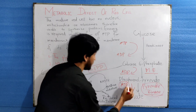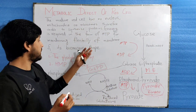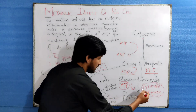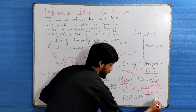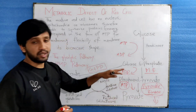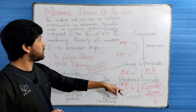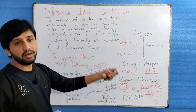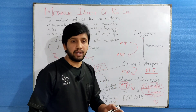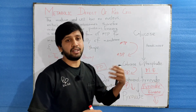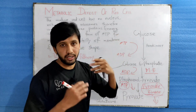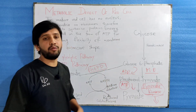Pyruvate kinase deficiency results in decreased production of ATP. We need ATP for red cell membrane integrity, flexibility, and its biconcave shape. Once there is pyruvate kinase deficiency, the decreased level of this enzyme results in decreased ATP production, which eventually leads to rigidity of the cell. The red cell membrane becomes rigid, the cells lyse, and this leads to the condition we call anemia.